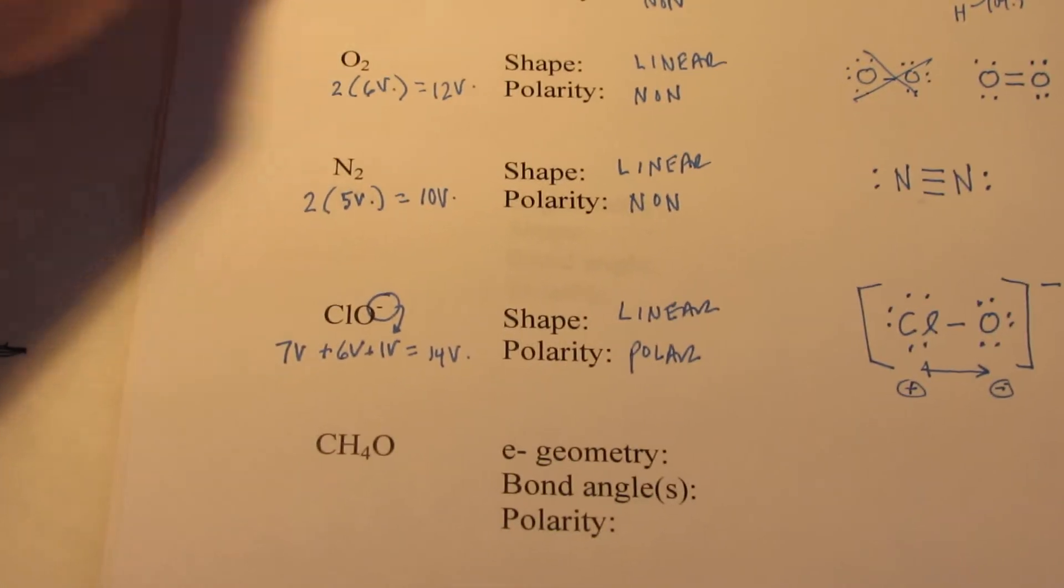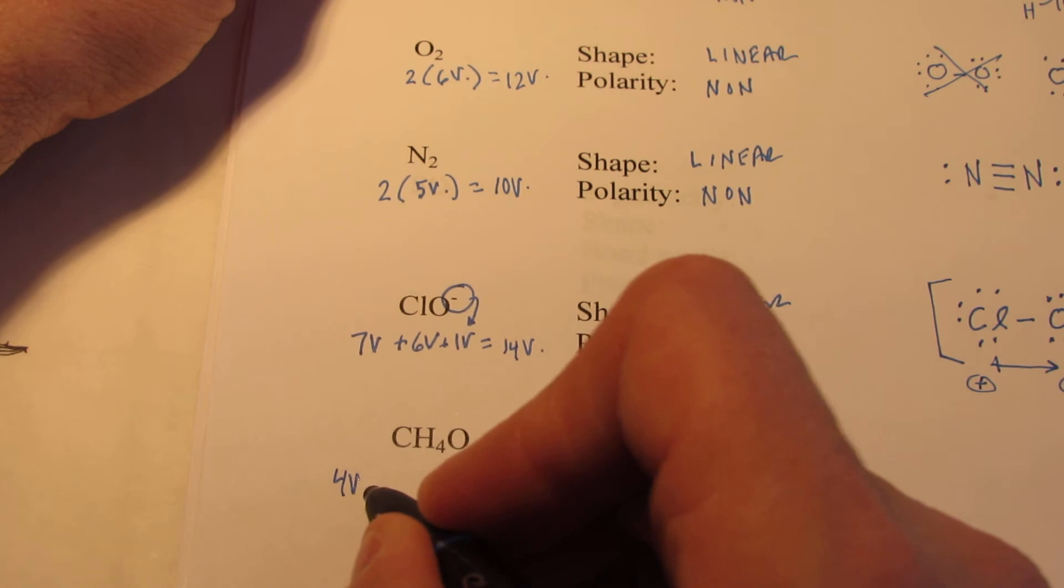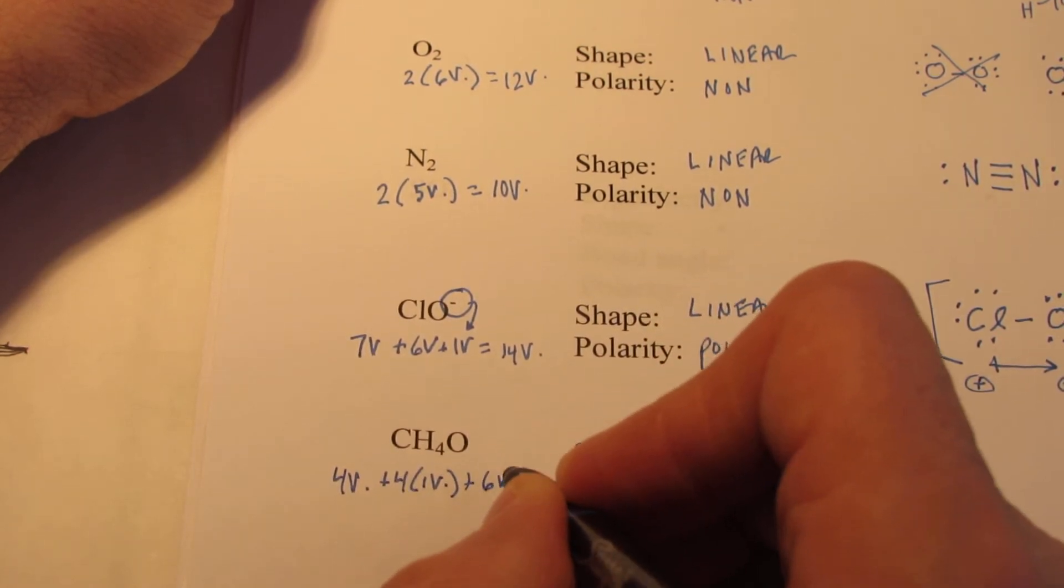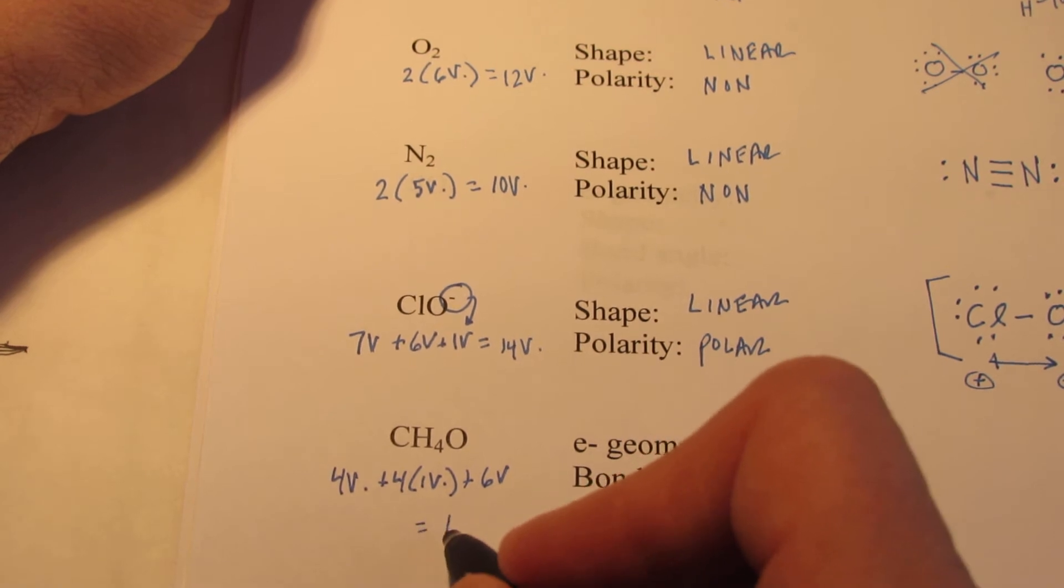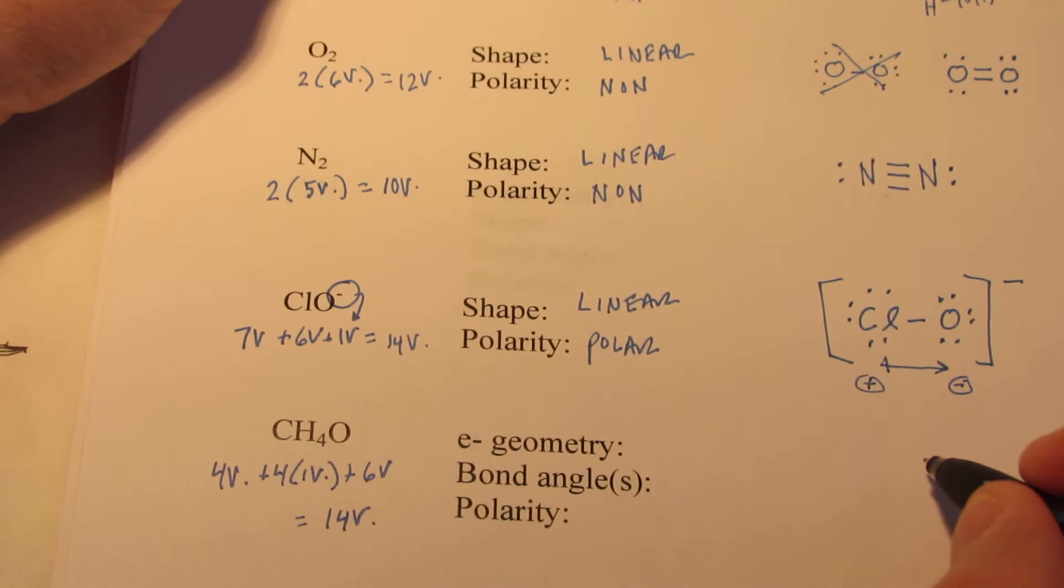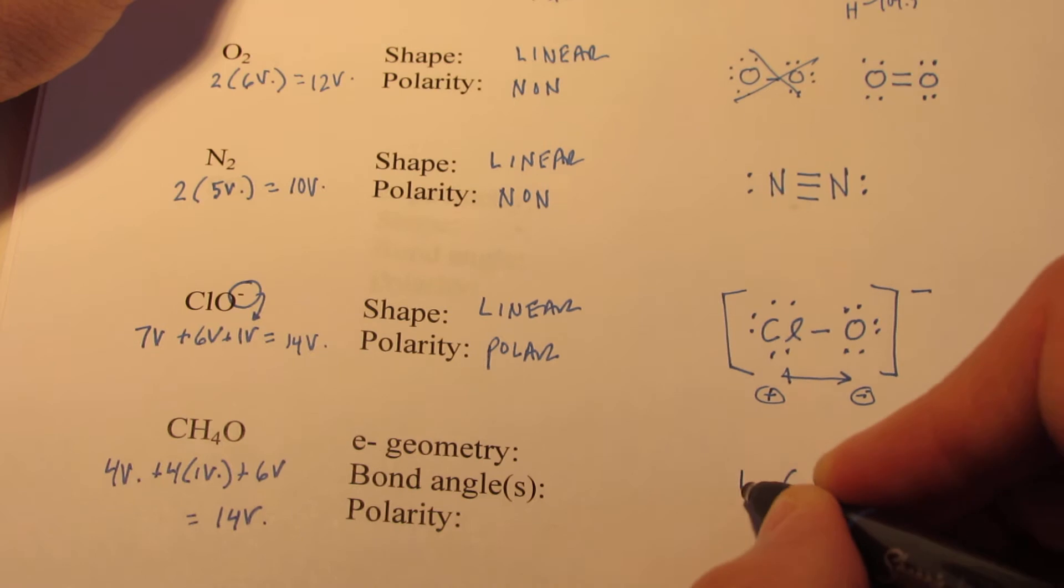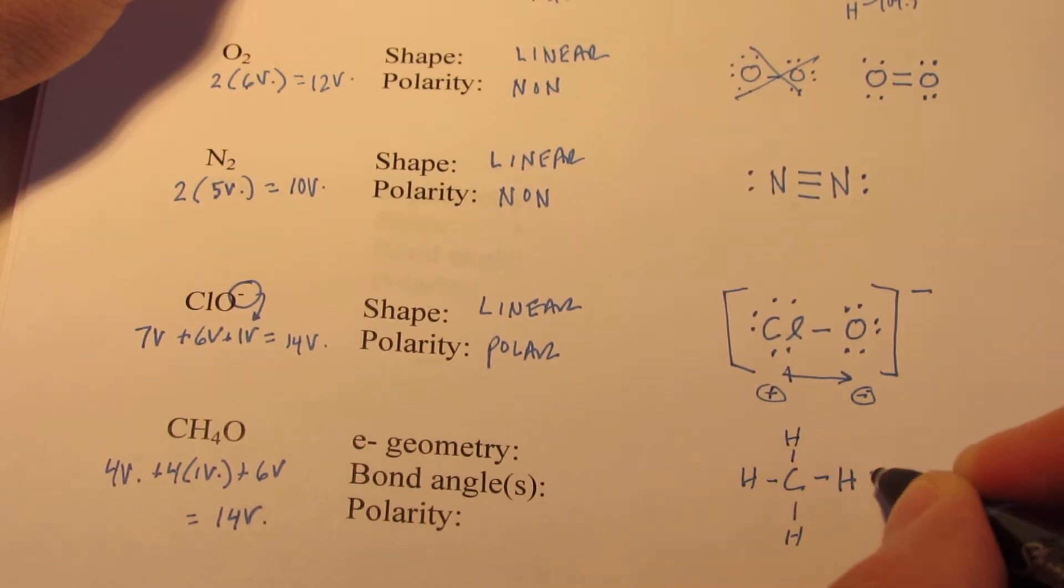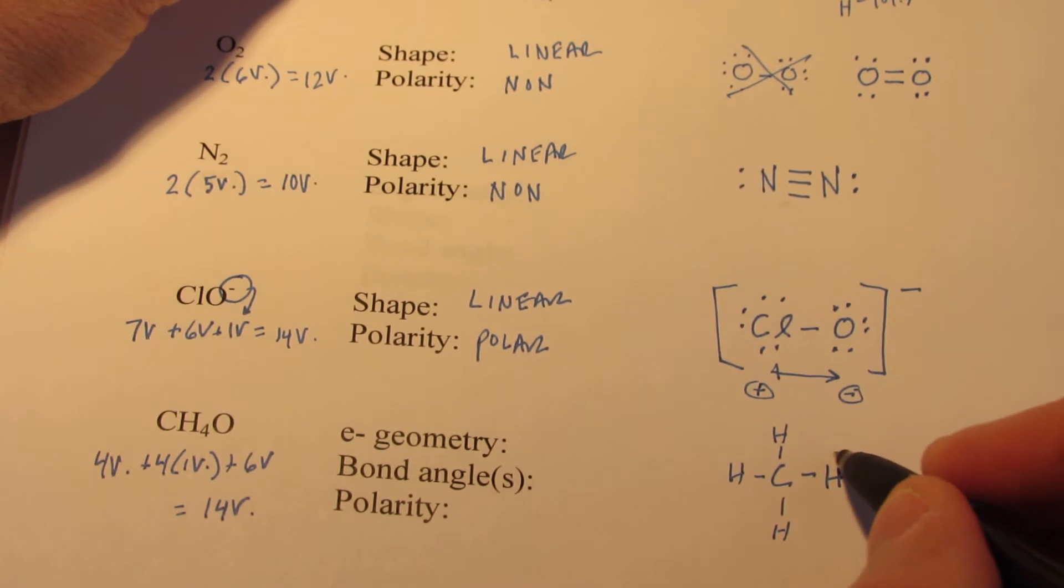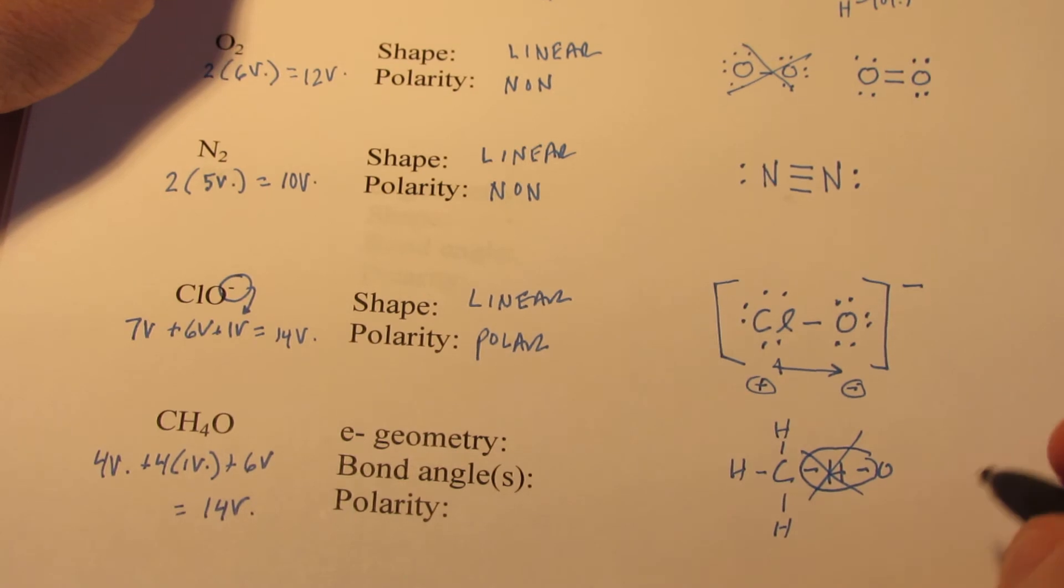All right, now this next one presents a few obstacles. CH₄O. We have 4 valence from carbon, each hydrogen has 1, and oxygen has 6. So you can see we have 14 valence. Now, if we try to draw something like CH₄ with an O coming off of one of those hydrogens, you see it doesn't work because that hydrogen has 2 pairs, which we can't do. So this is not valid.